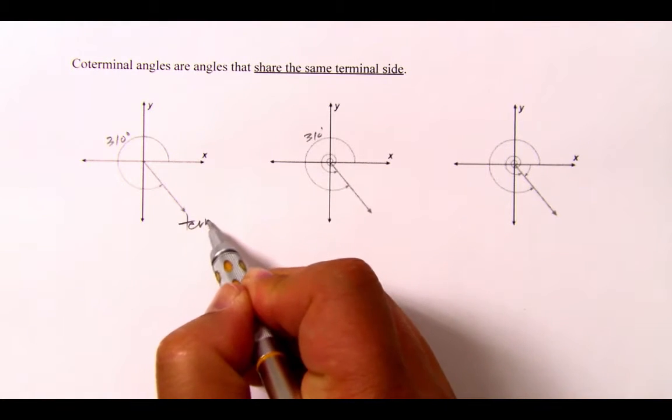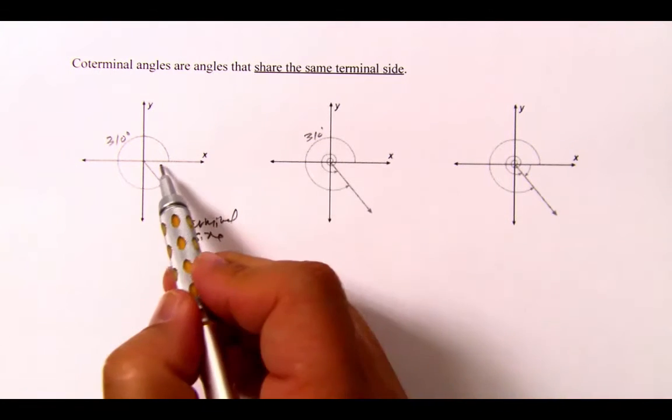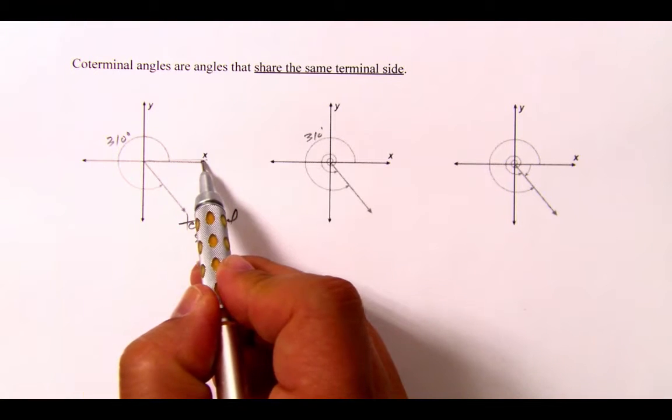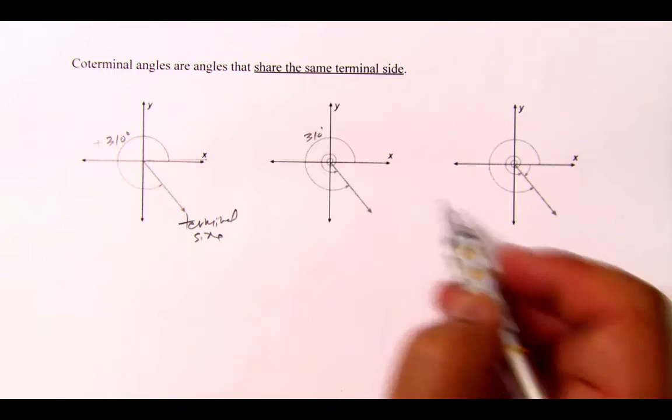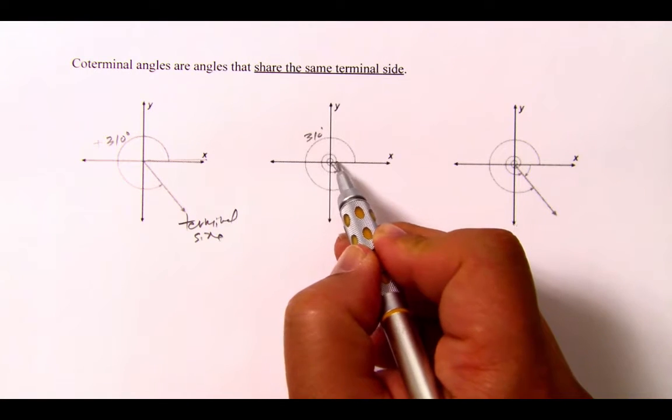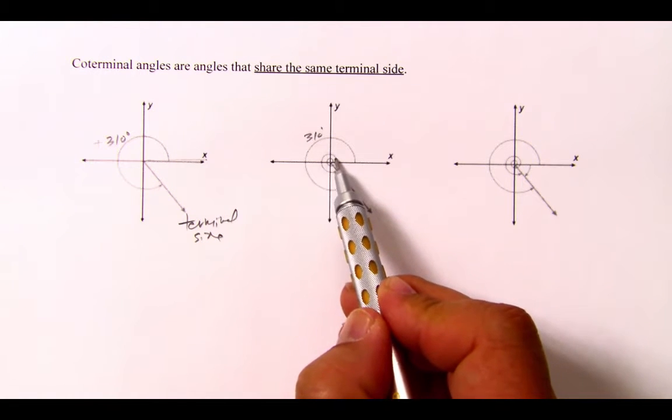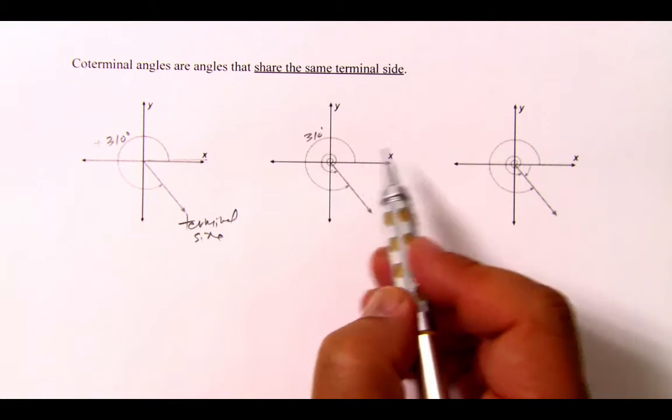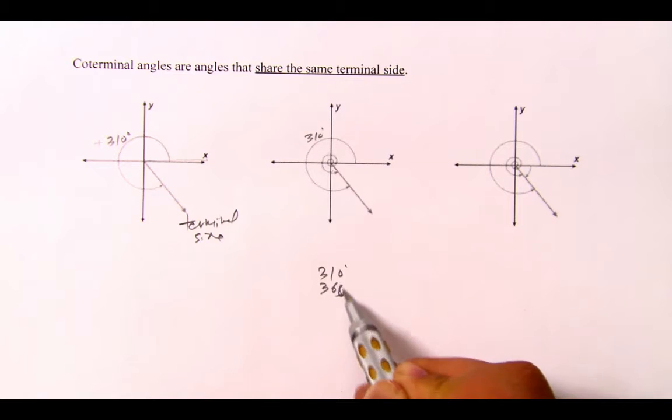So this is the terminal side right here. And the initial side is always the positive x-axis going counter-clockwise. Then it is positive. So we did the same thing. So here we start at the positive x-axis, made a full turn, and then came back around one more time.